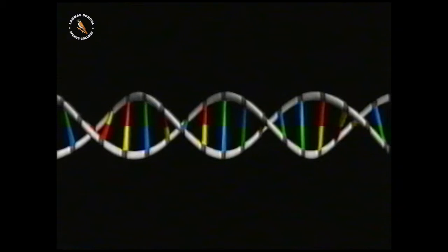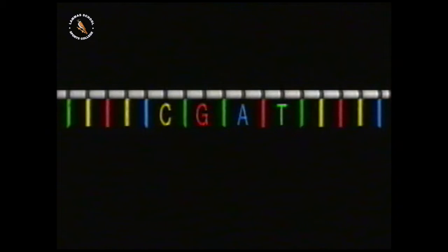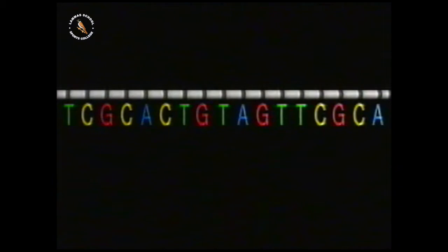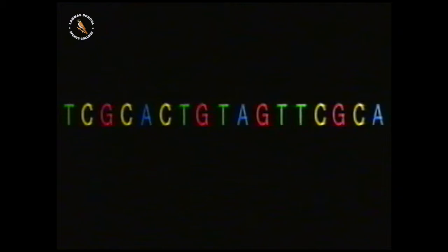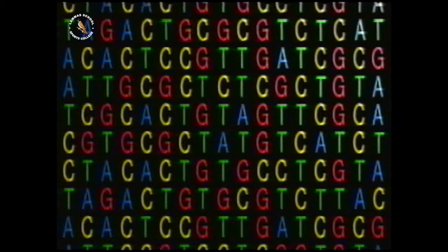A DNA molecule is shaped like a double helix. A long strand of DNA contains many pairs of smaller molecules called bases. If you could unwind the double helix, the pairs of bases would be arranged like the rungs of a ladder. There are four different bases called C, G, A, and T for short. These are the four letters of the genetic alphabet, and they can be arranged in any order. You can think of this arrangement as a genetic code containing all the instructions for making a living organism — there might be billions of letters.